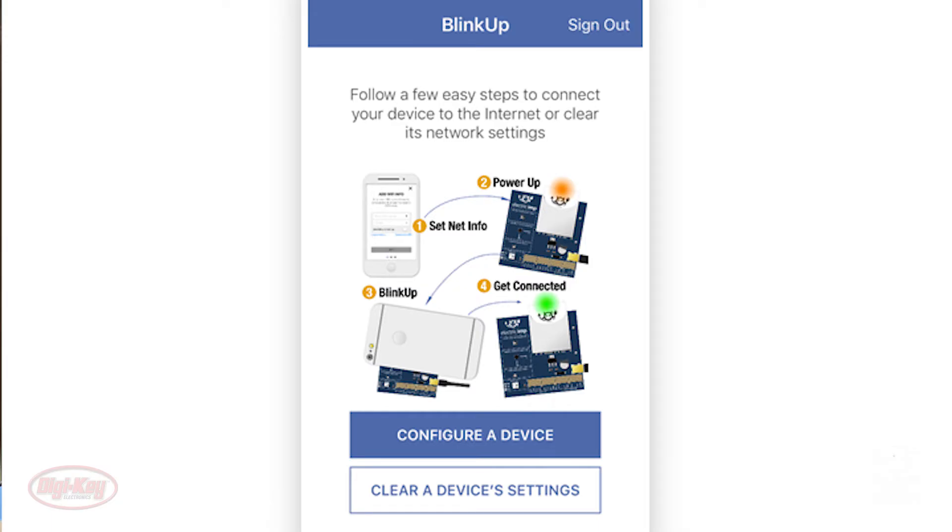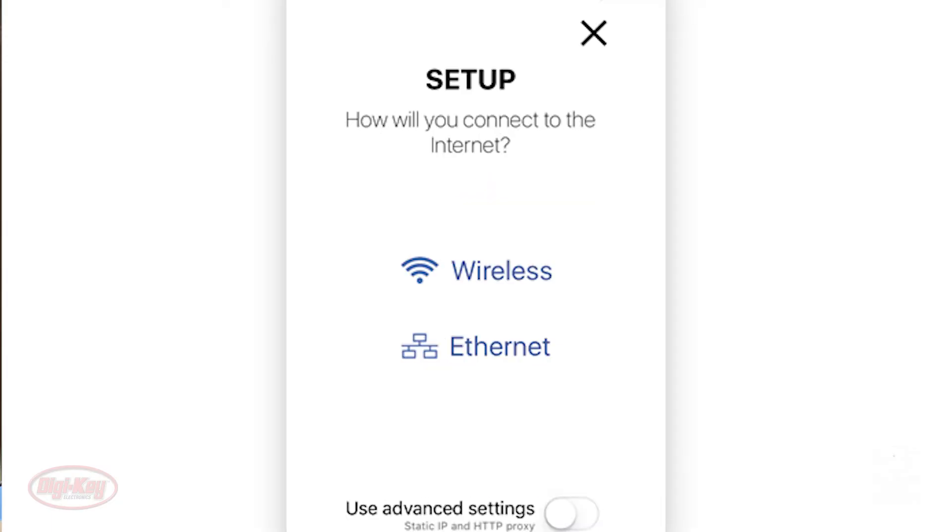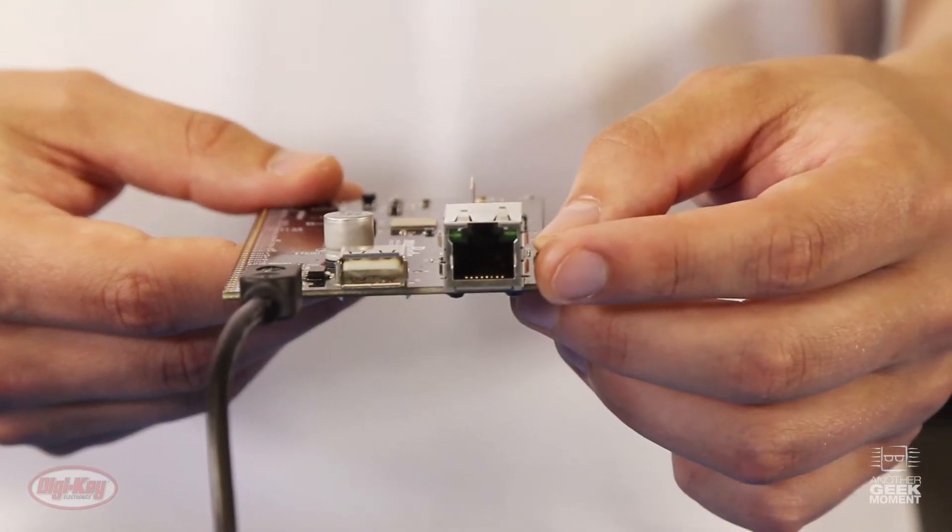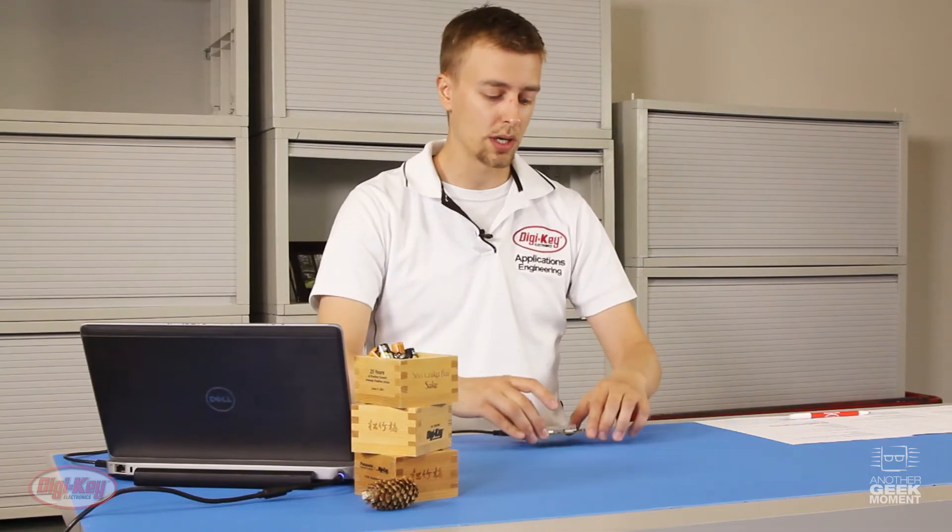So you choose to configure a device, and then from that you'll have a choice of wireless or ethernet, because there is an ethernet jack on here. We're not going to use this for today's purposes, but that is an option.